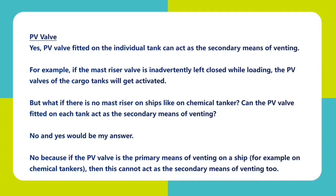A PV valve fitted on an individual tank can act as a secondary means of venting. For example, if the mast riser valve is left closed while loading, the PV valve of the cargo tank will get activated. But what if there is no mast riser on the ship, such as on a chemical tanker — can the PV valve fitted on each tank act as a secondary means of venting? We can say no, because if the PV valve is the primary means of venting on the ship, it cannot also act as a secondary means. However, if two PV valves are fitted on a tank, one can act as primary and the other as secondary means of venting.